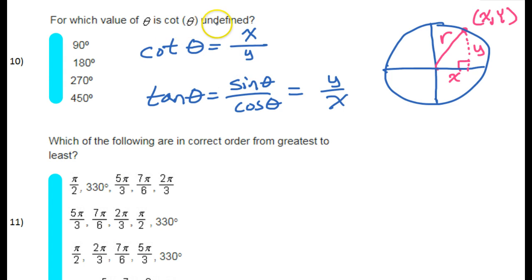If cotangent is to be undefined, the way you get undefined is by dividing by zero. So that means the y value has to be zero. So the question is where on the unit circle is the y value zero?